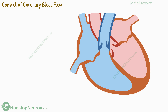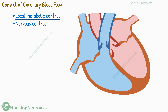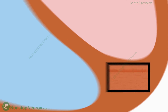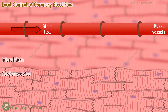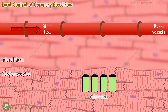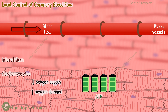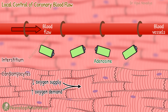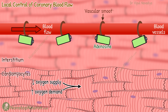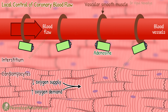Now let's talk about the control of coronary blood flow. There are two mechanisms involved: metabolic control and nervous control. For metabolic control, among many local factors, adenosine is considered very important. When there is a decrease in oxygen supply or an increase in demand, a large quantity of ATP is degraded to AMP in cardiomyocytes. The AMP then further degrades to adenosine, which is released into the interstitium. From here, it diffuses to vascular smooth muscle cells and causes relaxation, so the blood vessels dilate, which brings more oxygen.